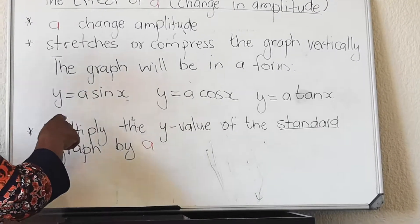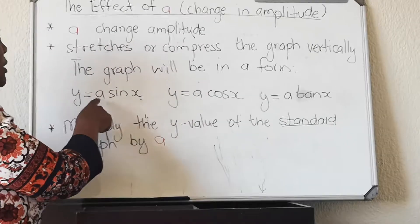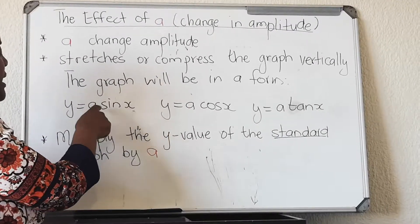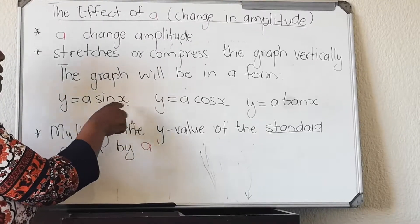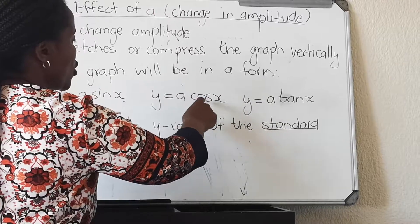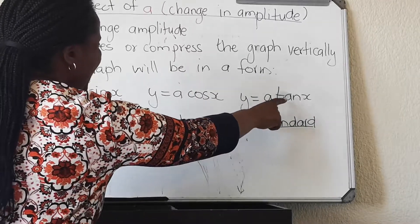The graphs will be given in this form: y is equal to A sine x, that number that is written before sine, that's your A. Y is equal to A cos x, y is equal to A tan x.